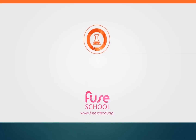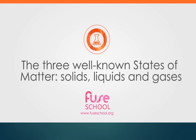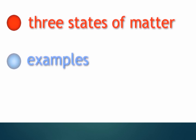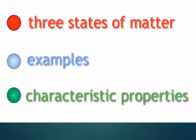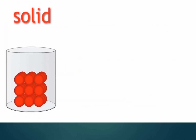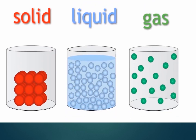Now, we are going to know the properties of each type of matter — the three states of matter: solids, liquids, and gas. We will know some examples, characteristics, and properties of solid, liquid, and gas.